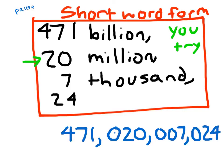Now if we looked at that thousands period, right, this seven right here is in the thousands place, so it is worth seven thousand. If we read this whole number, read it with me please: four hundred seventy-one billion, twenty million, seven thousand, twenty-four. Read it quickly: four hundred seventy-one billion, twenty million, seven thousand, twenty-four. Did I beat you there?